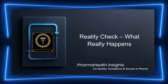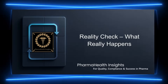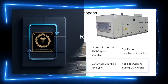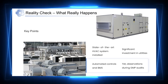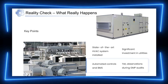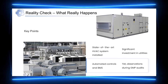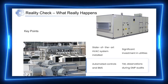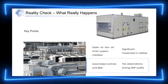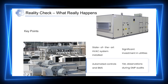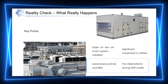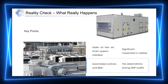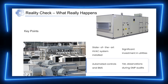Let me start by putting you into a situation that many of you may immediately relate to. Imagine an auditor walking through your plant. Everything looks impressive — chillers are new, ducts are clean, control panels are modern. The confidence level is high. Then the auditor asks a simple question: how do you ensure that air from this area does not contaminate the adjacent area? And suddenly, the room becomes quiet.